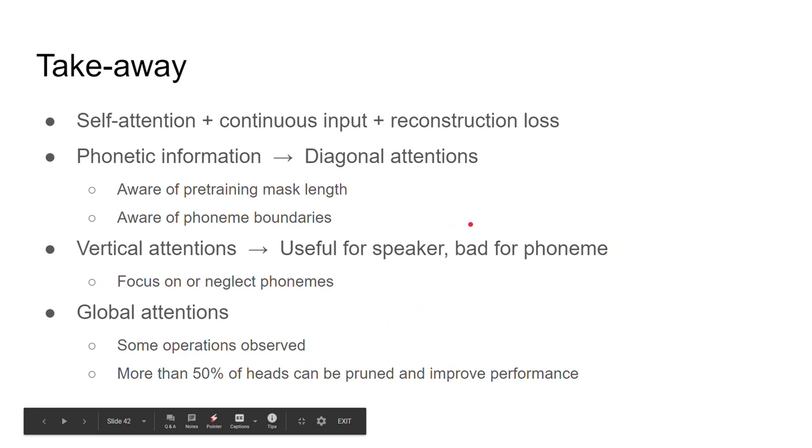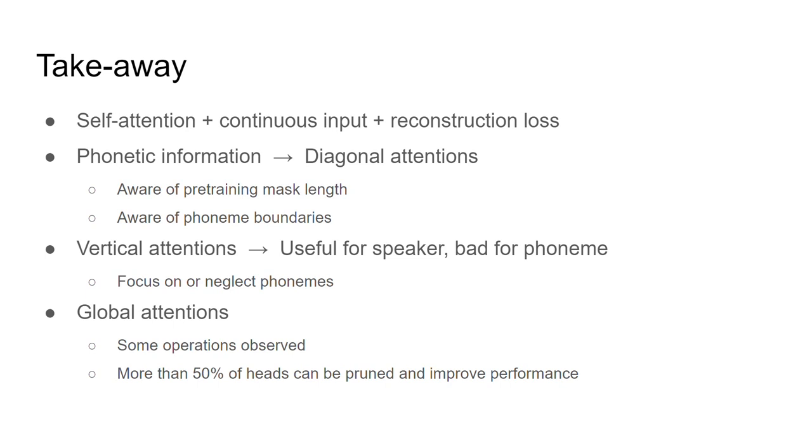So in conclusion, when adopting self-attention on continuous input with reconstruction loss, self-attentions have the following properties. Phoneme phonetic information is handled by diagonal attentions and they are aware of either pre-training mask length or phoneme boundaries. Vertical attentions help speaker identity in each frame but harm phonetic information, and there are two behaviors: focus or neglect specific phonemes. Some operations can be observed in global attentions, but they have the least impact on representation quality, and more than 50% of heads can be pruned following globalness metric and improve performance. The end, and thank you for listening.